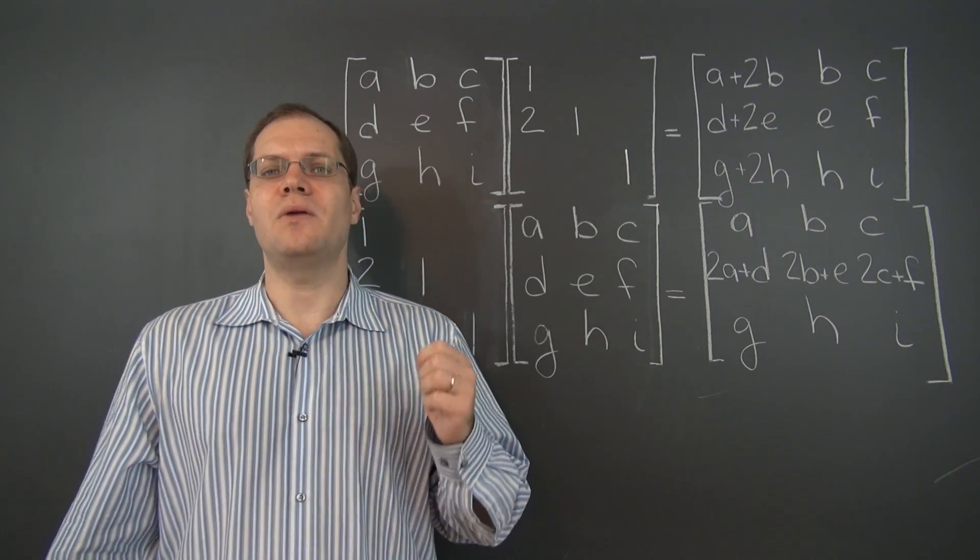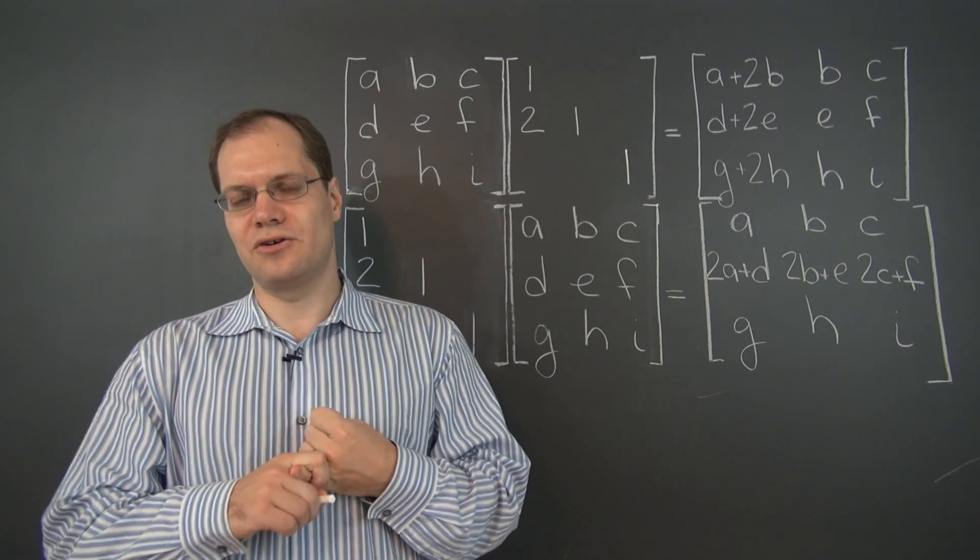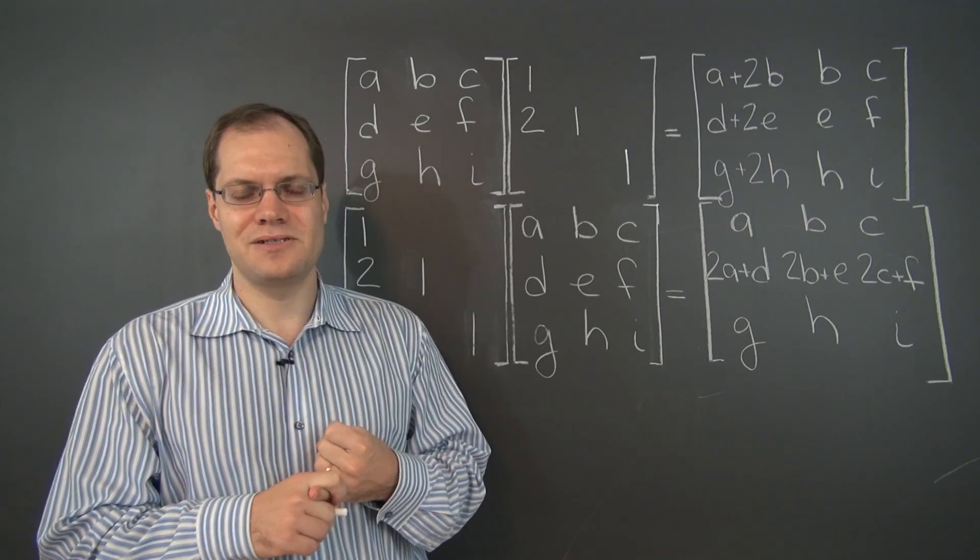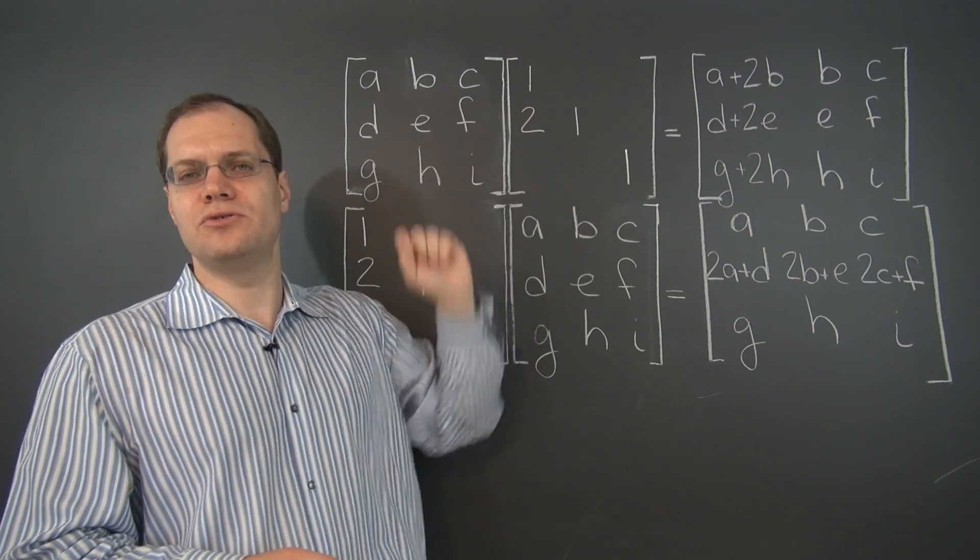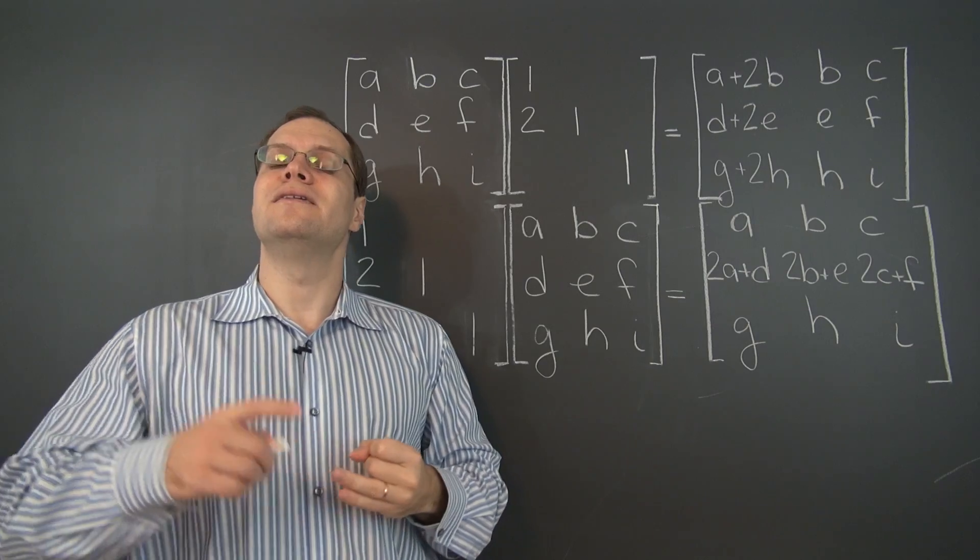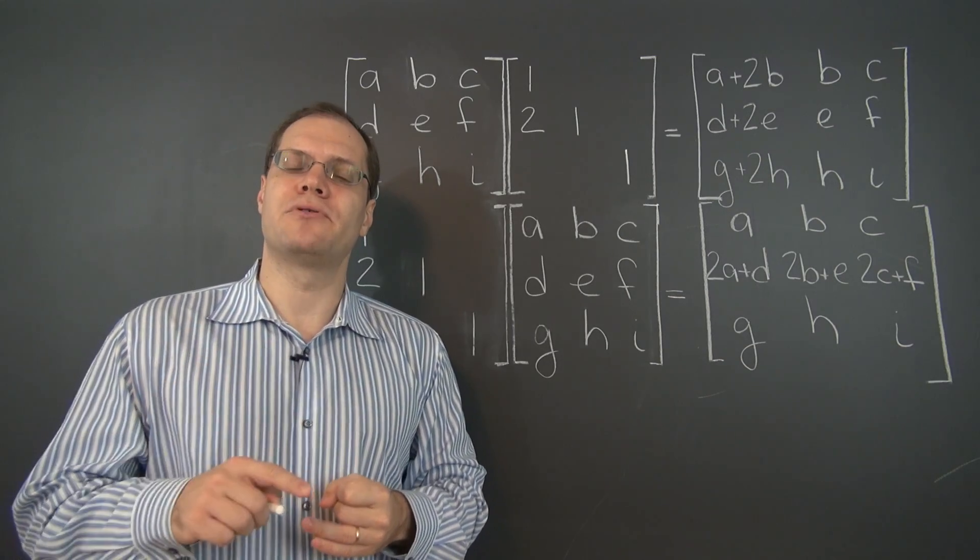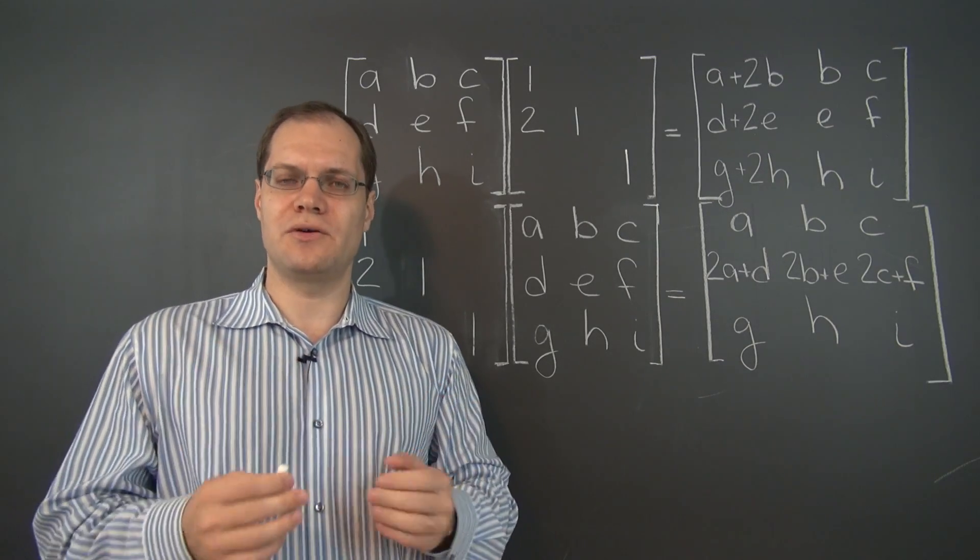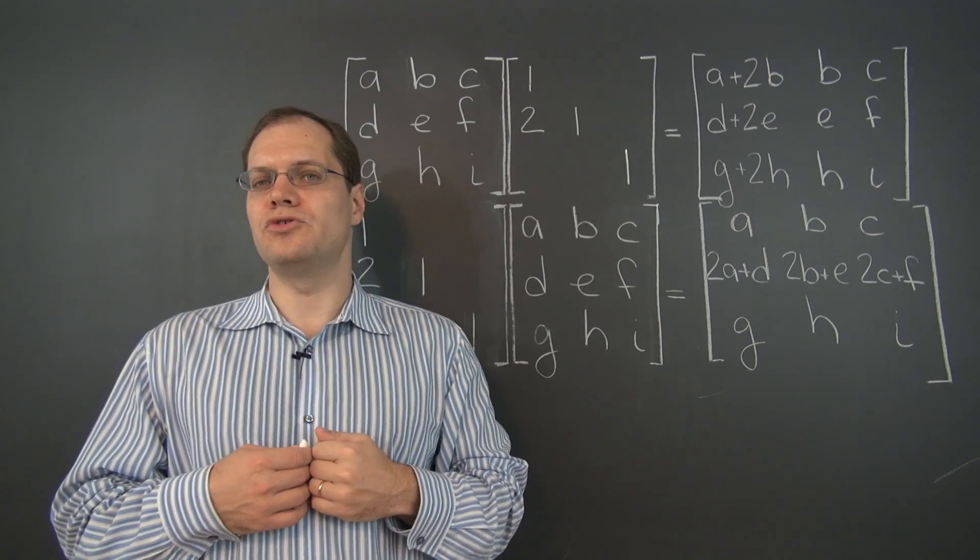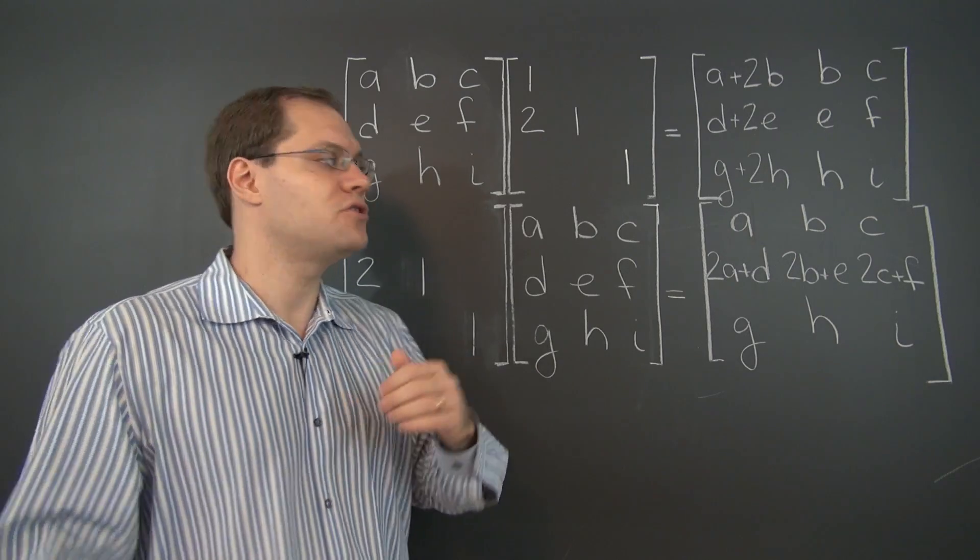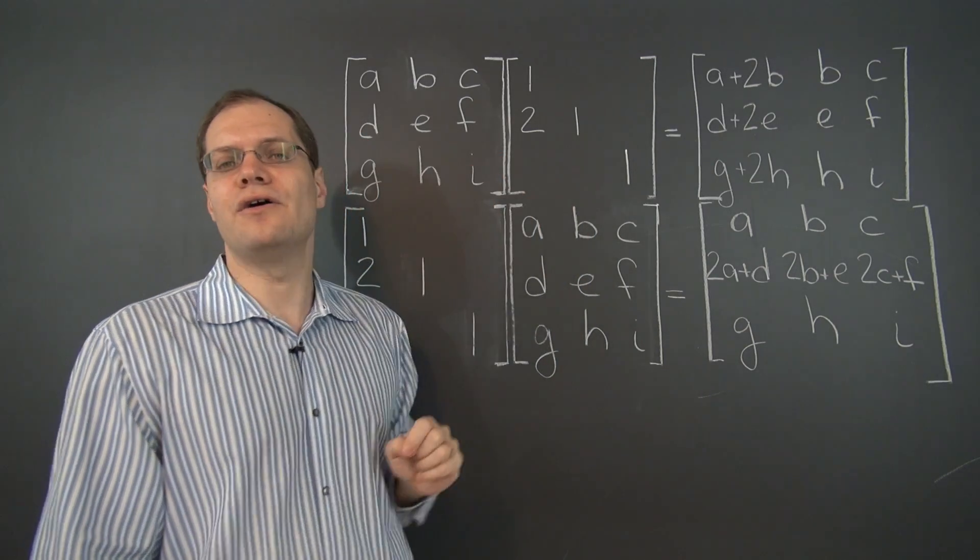So whenever you see a product and one of the matrices is elementary, you first look at whether it's on the right or on the left. And if it's on the right, you think columns, if it's on the left, you think rows. And if you need to determine what this matrix will do to the other matrix, you will explain to yourself the operations that make that matrix elementary. In other words, the column operations that you need to perform starting with the identity to arrive at this matrix. And once you say to yourself what those operations are, you simply need to carry out those operations on the matrix that it multiplies. Because that will be the effect that it will have on that matrix.